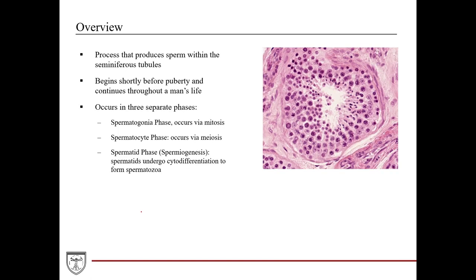Spermatogenesis is the process by which sperm is produced within the seminiferous tubules. It begins shortly before puberty and then continues throughout a man's life. This is in contrast to the female reproductive system, where a female begins losing oocytes at birth. Males continuously produce sperm all the way into old age, which makes even elderly men able to father children.